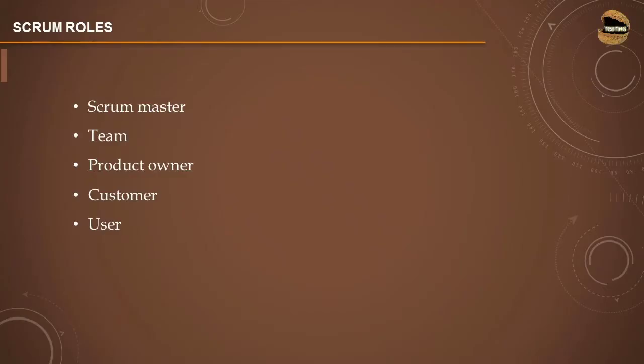In the previous tutorial, we understood a lot about basic terminologies and different work item types used as part of a Scrum project. In this tutorial, we will be covering more about Scrum roles — understanding how exactly these roles play a vital role and what those standard things are which we generally find when working in an industry. Some of the common roles include Scrum Master, Team, Product Owner, Customer, and User.